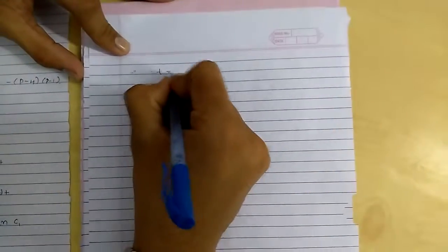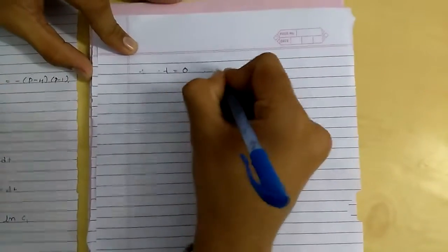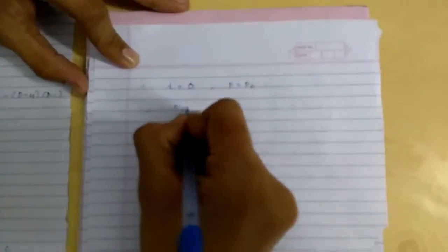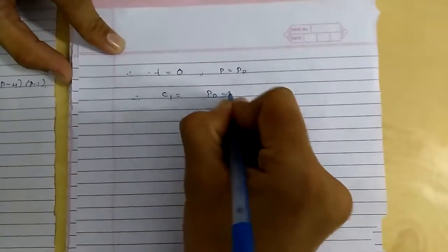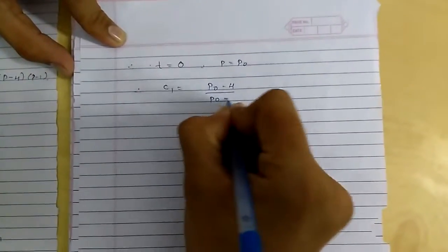Here, setting t equals 0 and p equals p0, so c1 equals (p0 minus 4)/(p0 minus 1).